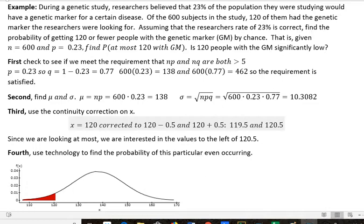During a genetic study, researchers believed that 23% of the population they were studying would have a genetic marker for a certain disease. Of the 600 subjects in the study, 120 of them had the genetic marker the researchers were looking for. Assuming that the researchers' rate of 23% is correct, find the probability of getting 120 or fewer people with the genetic marker by chance. That is, if N is 600 and P equals 0.23, find the probability of having at most 120 with the genetic marker. And is the 120 people with the GM significantly low? Is that a significantly low number, assuming that the 23% assumption is correct in a study with 600 subjects?